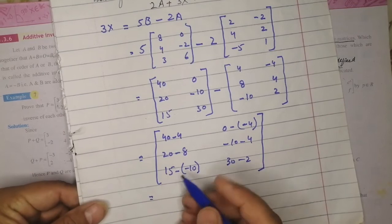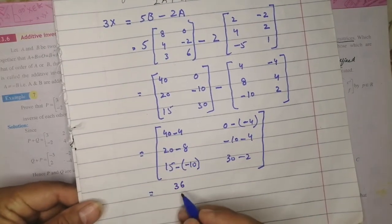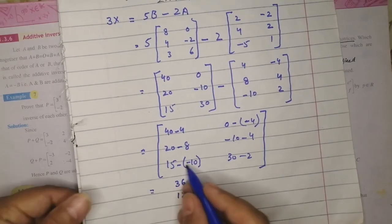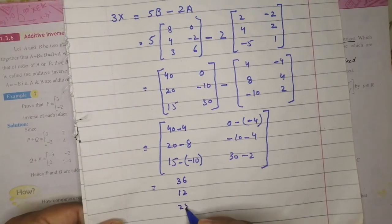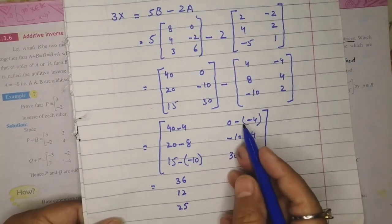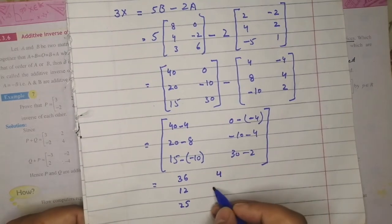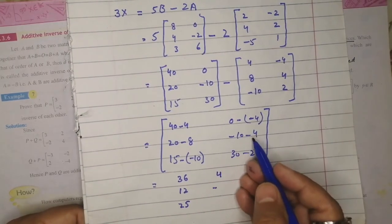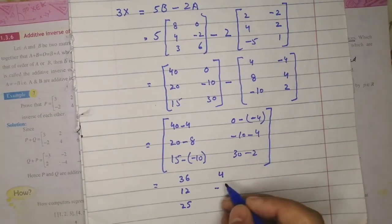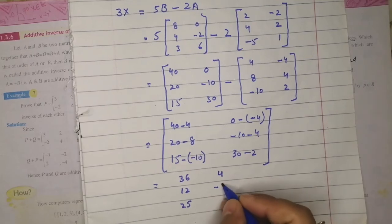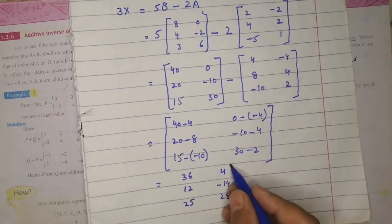Computing the results: 40 minus 4 equals 36; 20 minus 8 equals 12; minus minus becomes plus so 15 plus 10 equals 25; 0 plus 4 equals 4; minus 10 minus 4 equals -14 (both digits have minus so answer is minus); 30 minus 2 equals 28.